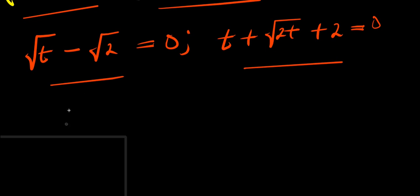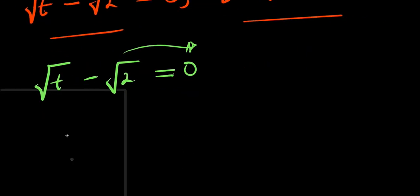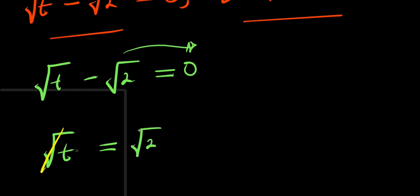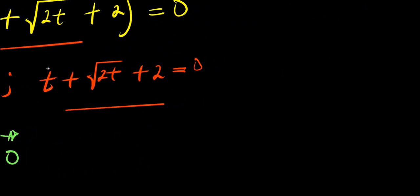Let's start with the first equation: square root of t minus square root of two equals zero. We move square root of two over, giving square root of t equals square root of two. Squaring both sides eliminates the square root and we get t equals two. So that is our first value of t — a real solution.